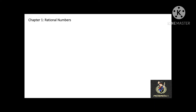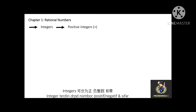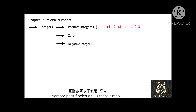The first topic of this chapter is integers. Integers can be positive integers, 0, and negative integers. For example, positive 1, positive 2, or positive 3. You can also write your positive integers without the positive sign. 0, negative 1, negative 2, or negative 3.